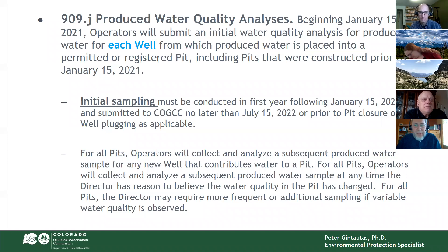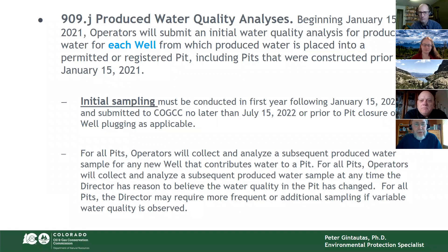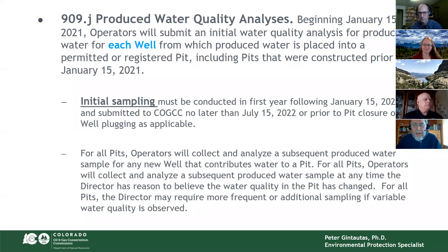Starting in January when the rules went into effect, operators have a year to sample produced water from each well going to a pit that were constructed before January 15, 2021, and that would also apply to new pits going forward if there are any. The initial sampling has to be conducted in the first year and submitted to the COGCC database no later than the middle of July 2022, to allow a little leeway for database entry issues.